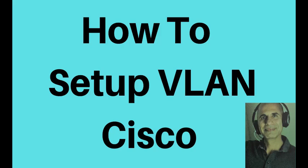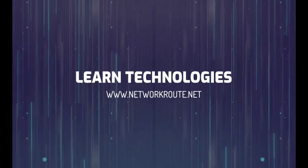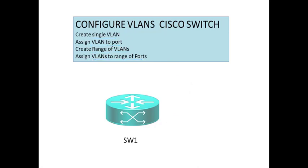Today's task is to configure VLANs on a Cisco switch. First, we will create a single VLAN and assign it to a port. Then we will configure multiple VLANs and assign those VLANs to a range of ports. In all our training videos we keep the topology simple, which allows us to focus more on the subject matter. Let's configure VLANs in Cisco IOS.